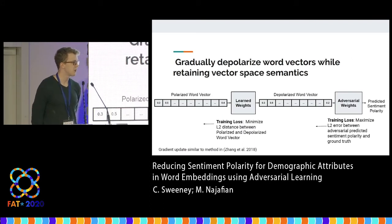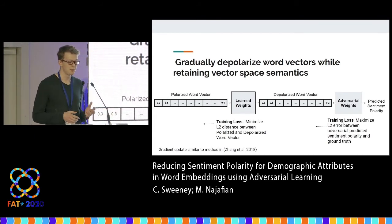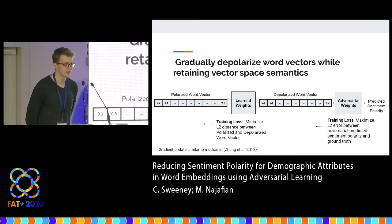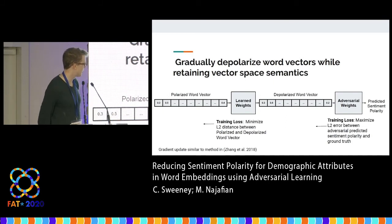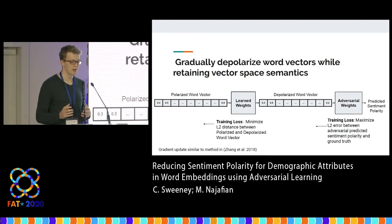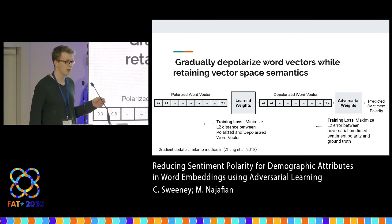People have solved similar problems in the past with adversarial learning, and it tends to be a good way to solve these types of problems. If an adversary can't extract sentiment from your word embeddings, neither can a downstream NLP model. Our algorithm works like this: we have a polarized word vector, use some learned weights to depolarize it, and then an adversary tries to take this depolarized word vector and predict the sentiment polarity. We train this on every word in the embedding model, maximize the L2 error between the adversarial predicted sentiment polarity and the ground truth, and minimize the L2 distance between our polarized and depolarized word vector. This constraint keeps our word vectors from moving around too much in the vector space, so we're not destroying the semantics. At inference time, we're just using the learned weights to re-embed demographic identity word vectors.